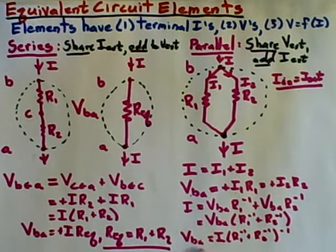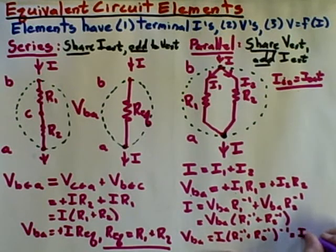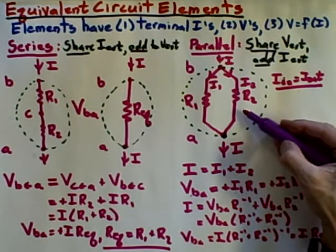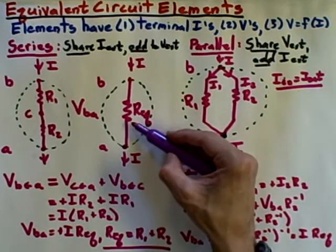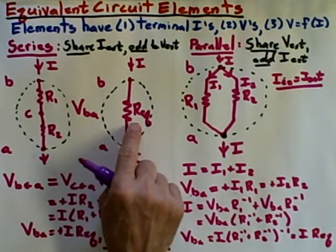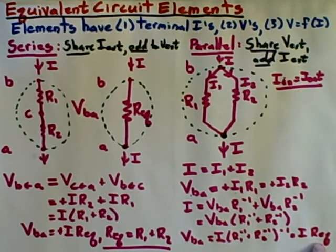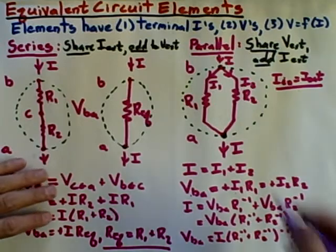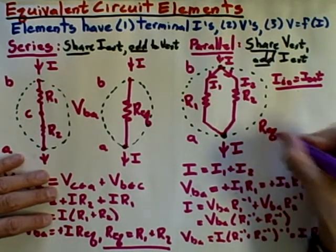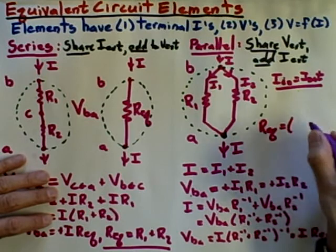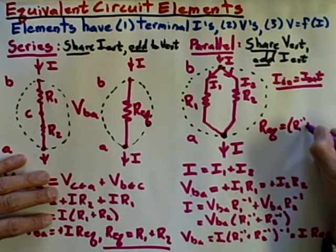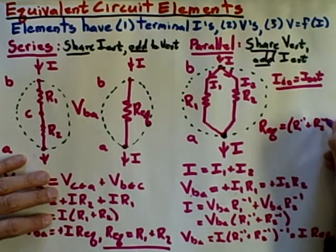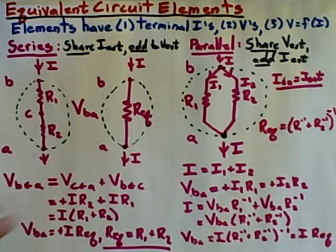And what I hope you will see is notice this again just looks like I times some equivalent resistance. So once again I could replace this parallel combination with a simple single resistor of an equivalent resistance. But now the equivalent resistance is a somewhat more complicated formula now that we are in the parallel case. Namely we see that the equivalent resistance now is the R1 inverse plus R2 inverse the whole quantity inversed.